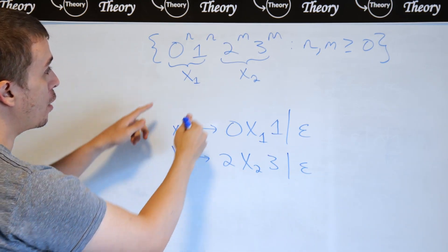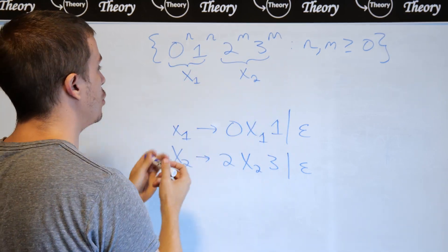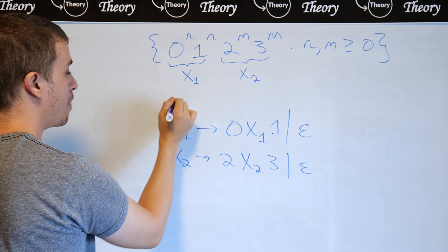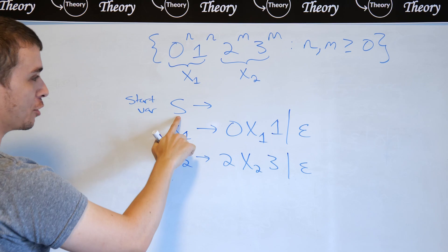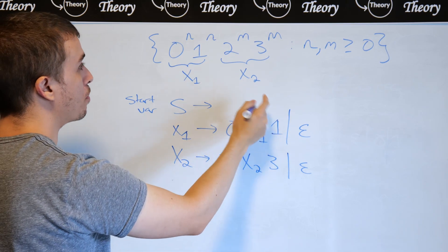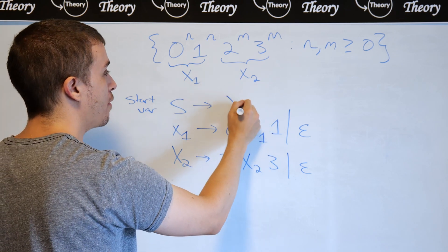And then how do we combine these together? Well, we can just follow the picture because x1 goes first, x2 goes second. So then my start variable, which I'm going to always call S in any grammar I make, is going to produce anything that x1 can make, and then x2, whatever x2 can make.